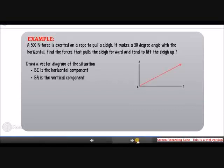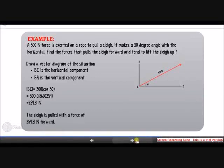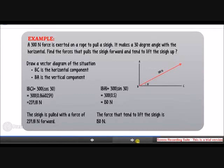BC in this diagram is the horizontal component and BA is the vertical component. To find BC we use SOHCAHTOA. BC equals 300 multiplied by cos 30, which gives 259.81 newtons. For BA, it's 300 multiplied by sin 30, which equals 150 newtons. These are the forces that tend to move the sledge upwards and in the forward direction.